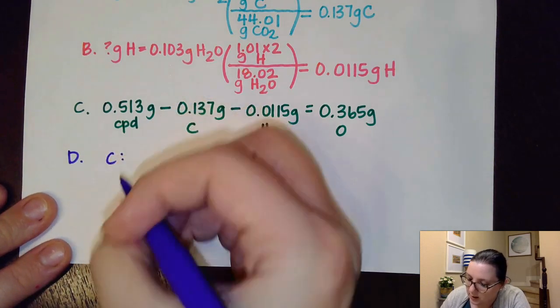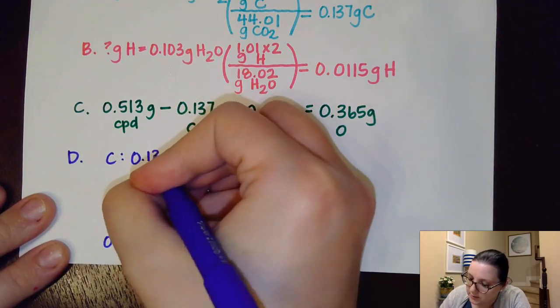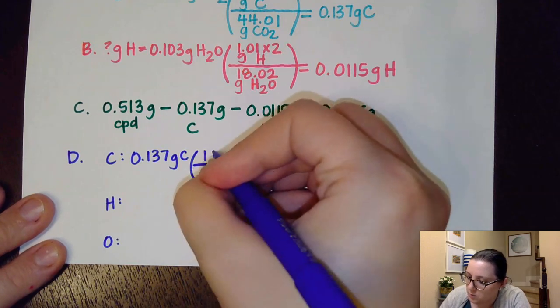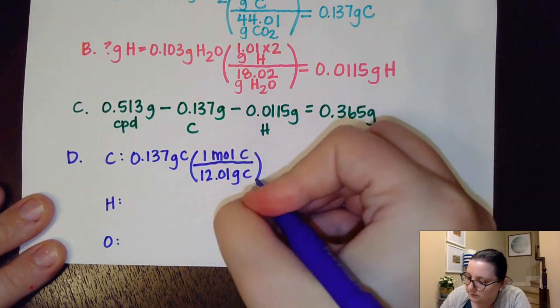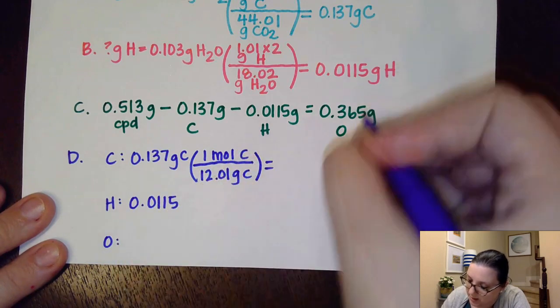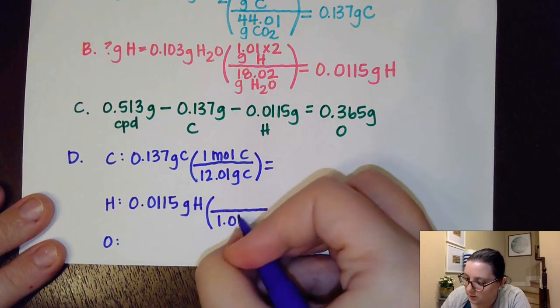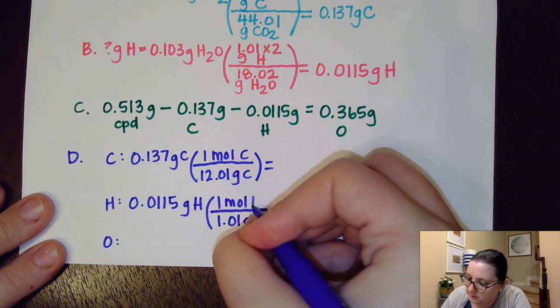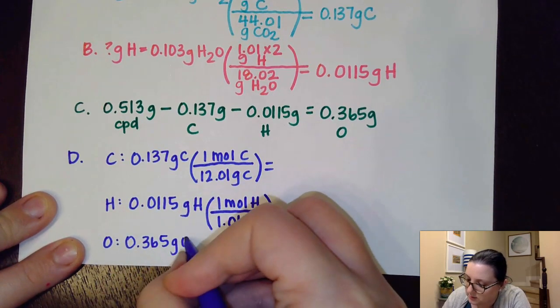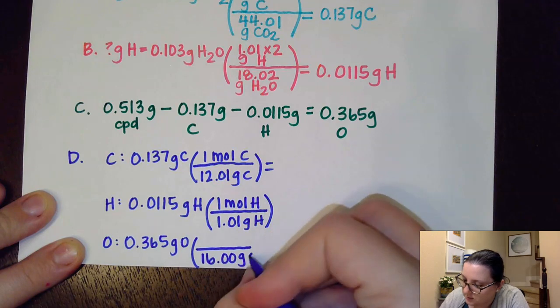So I'm going to write down my three elements. I had carbon and hydrogen and oxygen here. Carbon was 0.137 grams. Do my 12.01 grams to one mole of the carbon. Get a number there. My hydrogen, 0.0115. So again, I'm just using the masses from up here. And then I'm doing my mass to mole step. 1.01 grams of hydrogen to one mole of hydrogen. And same thing here on oxygen. 0.365 grams of oxygen. So I have 16 grams for every one mole.